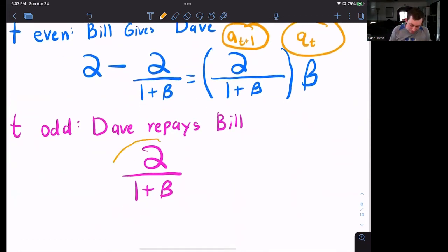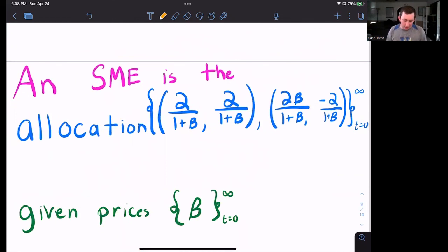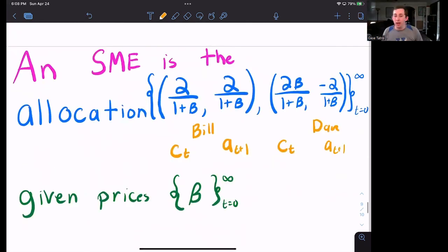And then in the odd periods, Dave repays Bill that number of coconuts, which is two over one plus beta. So our final sequential market equilibrium is the allocation. And you see here, where this right here is Bill, this is Bill's consumption, this is Bill's asset in time t plus one, we have Dave over here, where this is his consumption in every period. This is his assets in t plus one, given prices of beta, and now we're done.